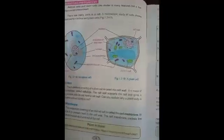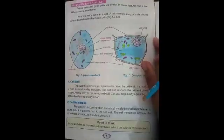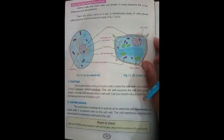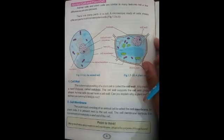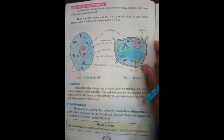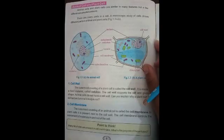In lecture number one we discussed about cells and the microscope — what is the cell and its functioning, how cells are in the body, and what is the work of the microscope. We can't see cells with the naked eye; we discussed that in lecture number one. Today in lecture number two we are discussing about animal cells and plant cells. Let's start.